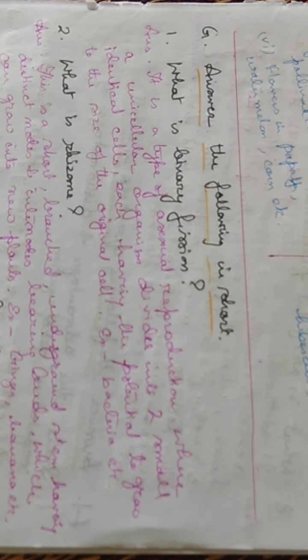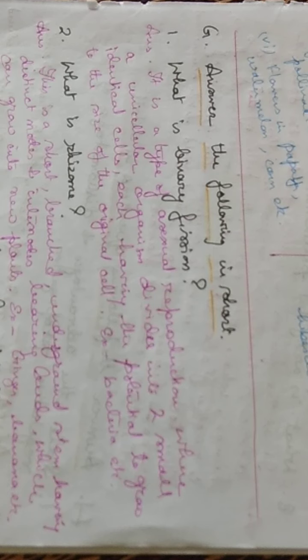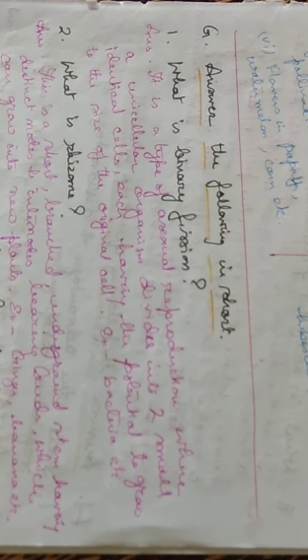What is binary fission? Binary fission is a type of asexual reproduction where a unicellular organism divides into two small identical cells, each having the potential to grow to the size of the original cell. Each cell formed by the division of the parent cell has the potential to grow to the size of the original cell. For example, bacteria.